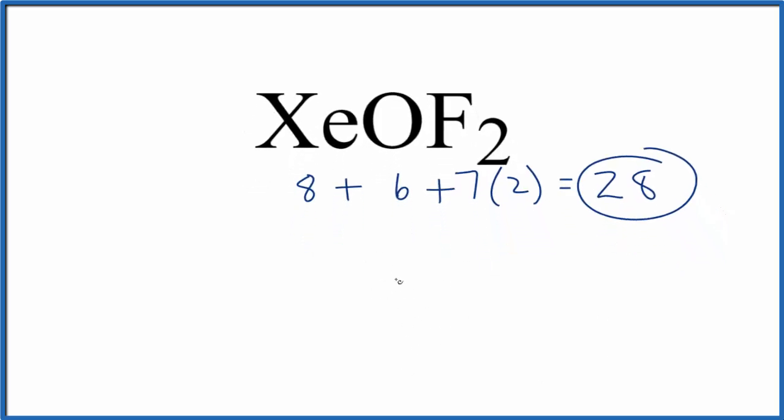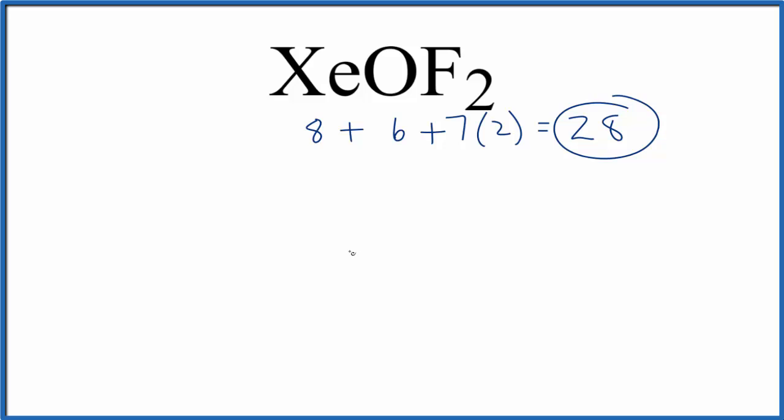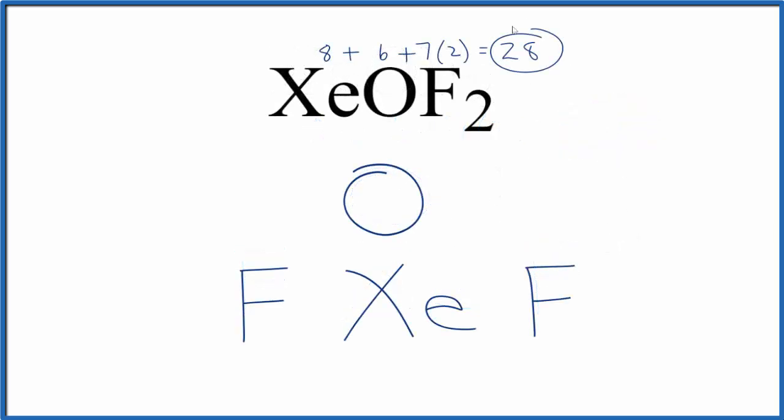We're going to put xenon in the center. That's the least electronegative. So we'll put it right here. And then let's put the fluorines on either side. And then the oxygen atom, we can just put that on top. So we have a total of 28 valence electrons for XeOF2.